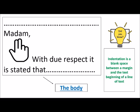The first line of the body of the application is always written leaving two finger spaces from the left-hand side after the salutation part. As you can see on your screen, I have written 'Madam comma,' and on the next line I have given two finger spaces and then written 'With due respect, it is stated that.' This part of the application is called the body.